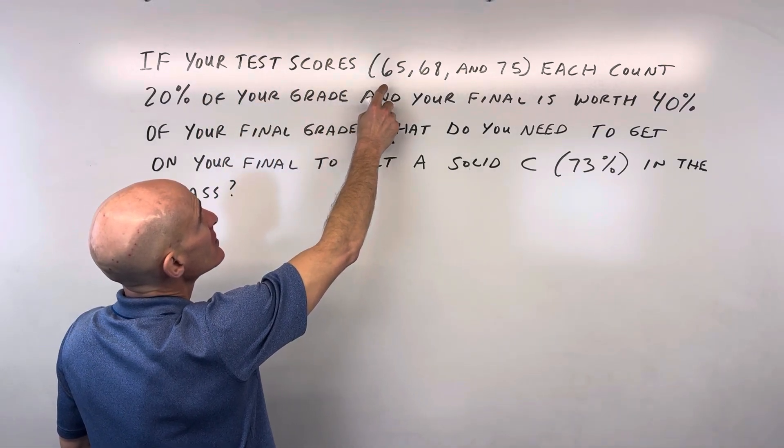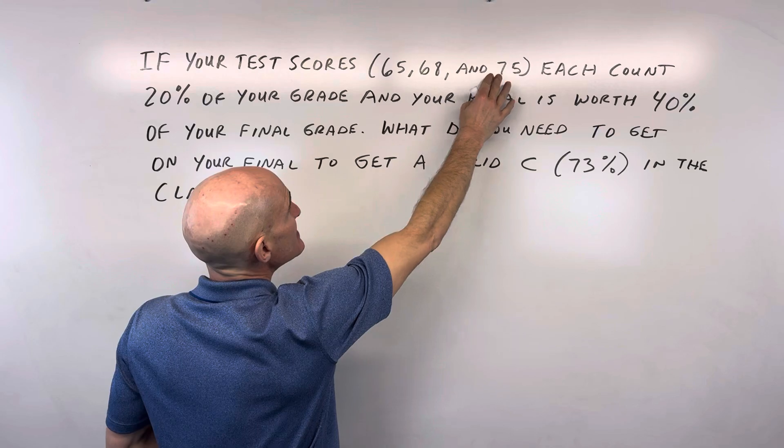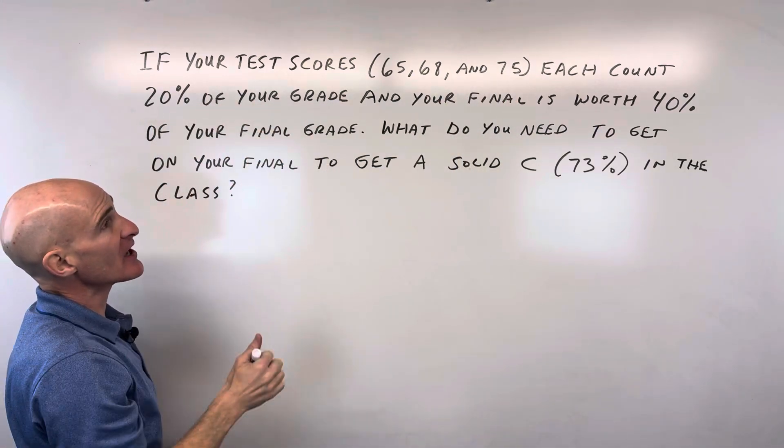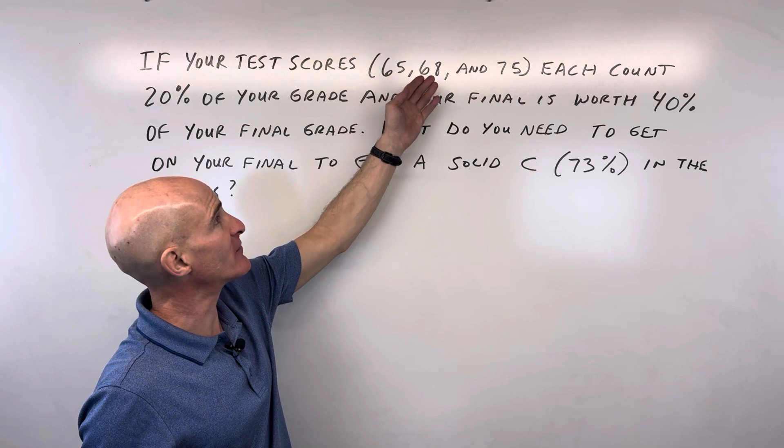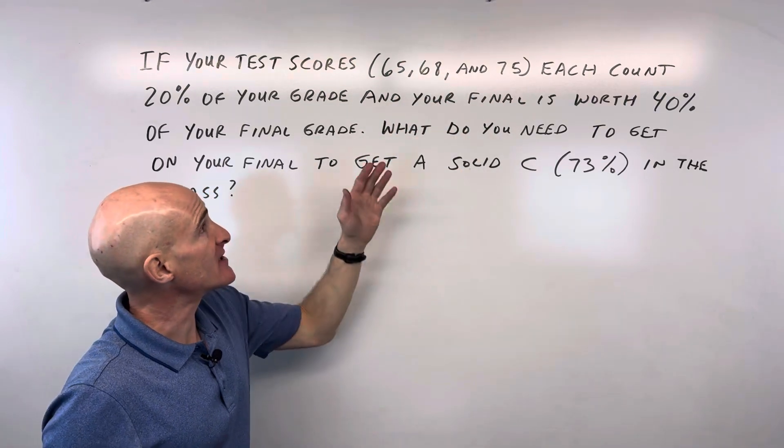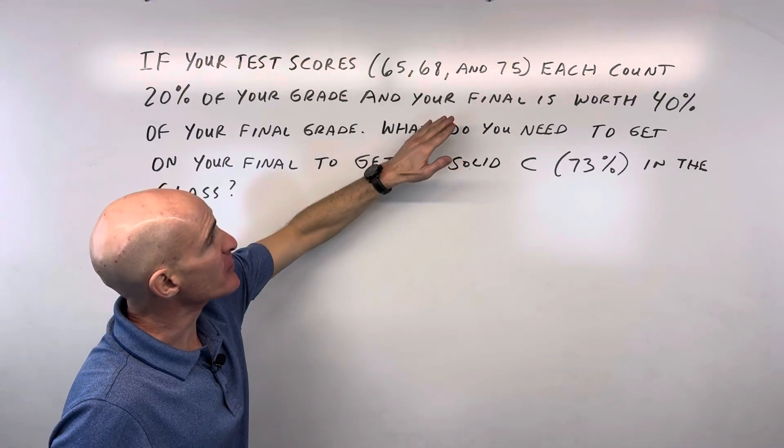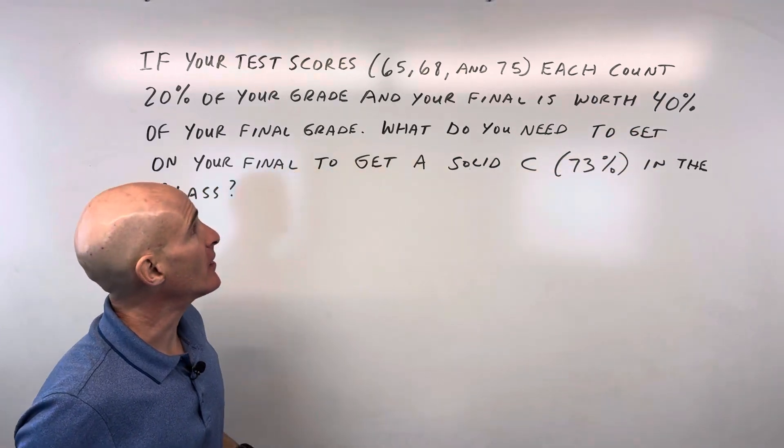If your test scores are 65, 68, and 75, and each counts as 20% of your grade, that's 60% of your grade total. But your final, let's say, is worth 40% of your grade.